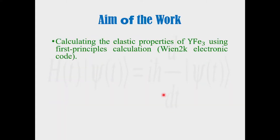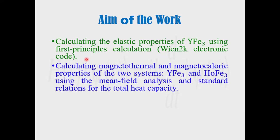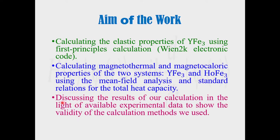Aim of work: calculating elastic properties of yttrium iron-3 using first-principle calculation as implemented in the WIEN2k electronic code. Calculating magnetothermal and magnetocaloric properties of the two systems — yttrium iron-3 and holmium iron-3 — using mean field analysis and standard relations for the total heat capacity. Finally, we will discuss the results of our calculations in the light of available experimental data to show the validity of the calculation methods used.